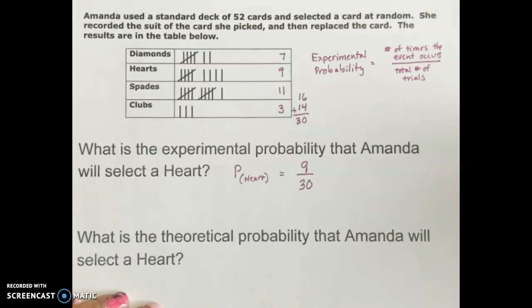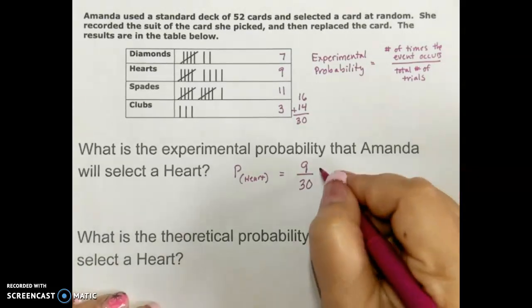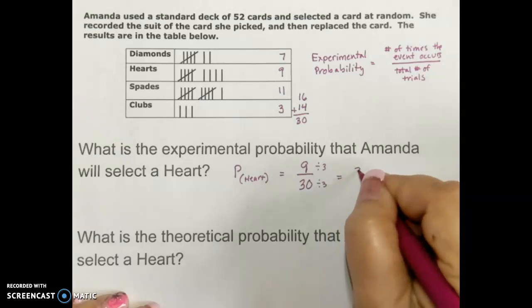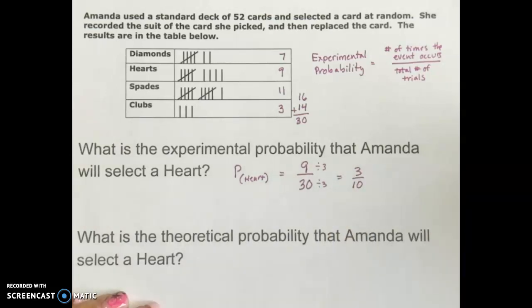Remember that if we can simplify our probability fraction, we should. I noticed that I can divide both of these by three and the experimental probability that Amanda selects a heart is three out of 10.